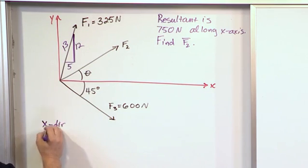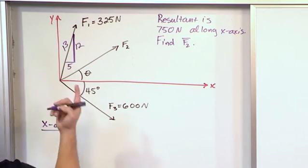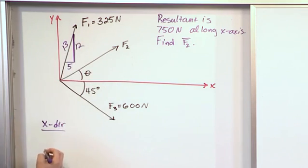Let's work in the x direction. So for vector F1, we have a problem right away. We don't know what its angle is, but we know something about this little triangle here.